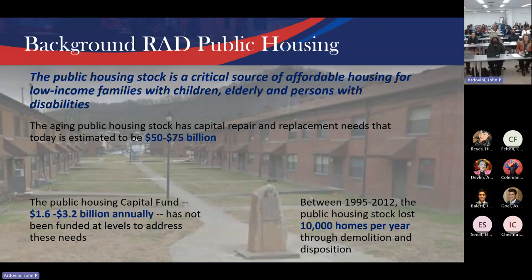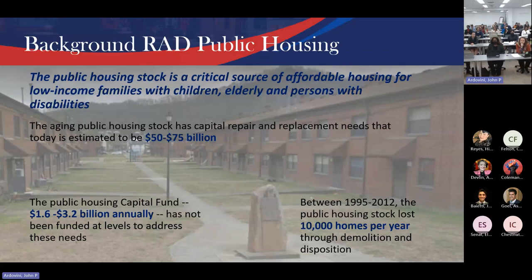Each year over the past 20 years, we've seen anywhere from 1.6 billion to 3.2 billion funded through the capital fund program — 3.2 billion is actually a high watermark. With 900-plus thousand units of public housing, do the math quick: that's like $3,500 per unit. Some housing authorities get more, some get less based on the age of the asset, but $3,500 per unit — that's tough. There goes your budget.